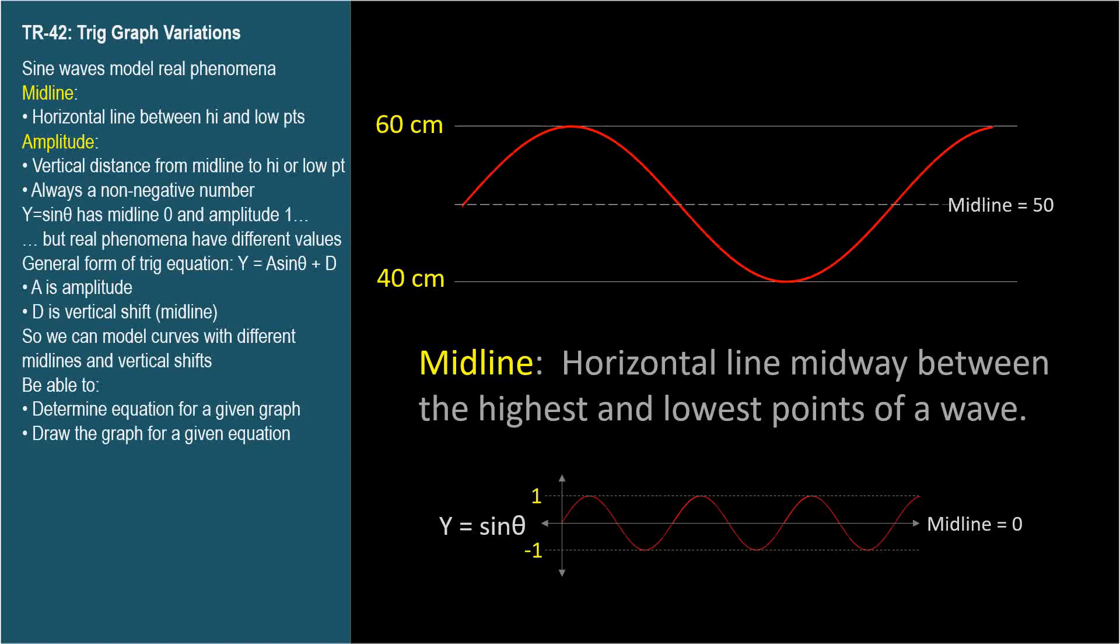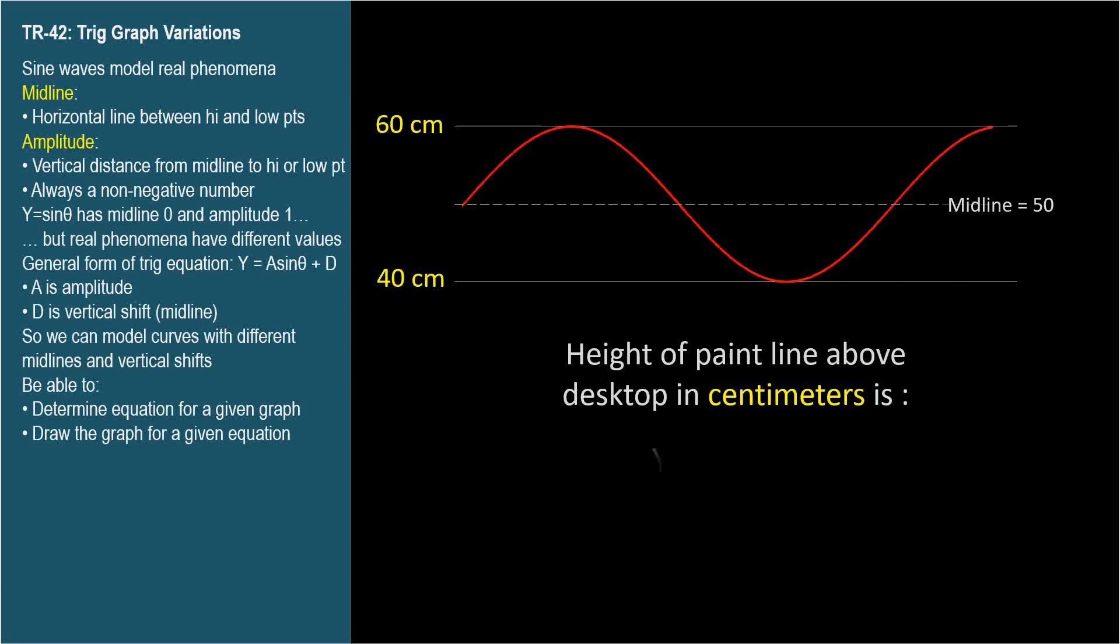The average of 60 and 40. To account for the non-zero midline, we can transform the equation y equals sine theta by adding 50, like this: y equals sine theta plus 50. We don't usually put units in the equation; rather, we're told the units when we're given the context of the equation.